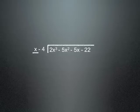The first step is what times x is equal to 2x cubed? In this case 2x squared. We're gonna take that 2x squared times x and we're gonna put it right there and we're gonna subtract it. So we have 2x cubed minus 2x cubed which is of course zero.